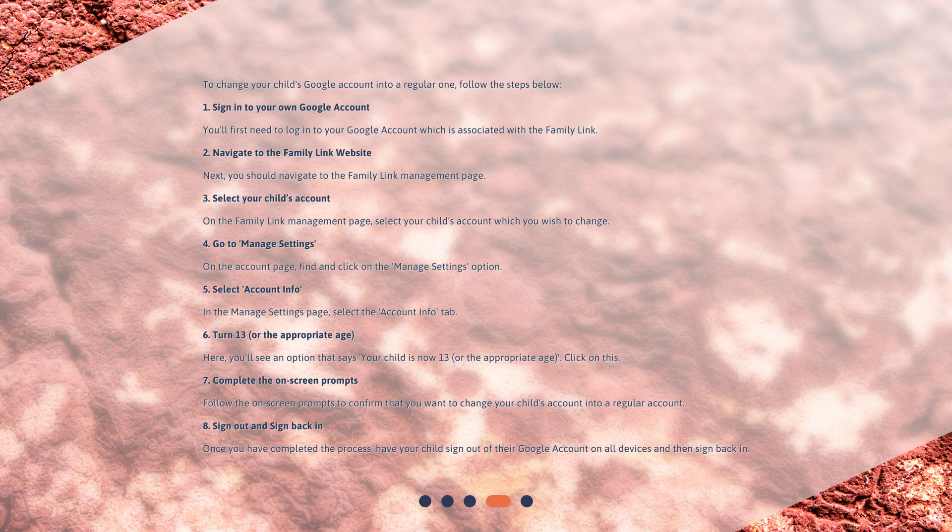Step 4: Go to Manage Settings on the Account page. Find and click on the Manage Settings option. Step 5: Select Account Info. In the Manage Settings page, select the Account Info tab. Step 6: Here, you'll see an option that says your child is now 13, or the appropriate age. Click on this.